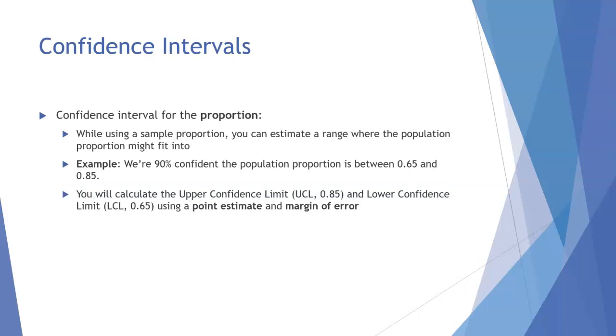We can do this for proportions as well. Notice it's pretty similar to what we just talked about. For proportions, we use a sample proportion to estimate a range of values where the population proportion could fit into. Our example statement here is we're 90% confident that the population proportion is between 0.65 and 0.85.